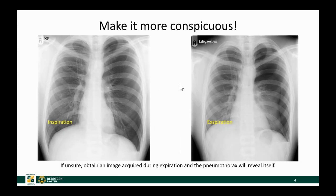Sometimes the white line is not really visible, not conspicuous. Instead of just relying on the inspiratory image, we get an image in expiration, and with that we will make the white line more conspicuous. You can see on this image that the white line of the pneumothorax is not that obvious. However, if the same patient is imaged during expiration, the lung will further collapse and the void left behind the collapsed lung is even more conspicuous in the apical area and along the chest wall.